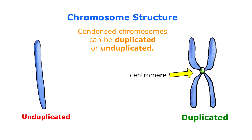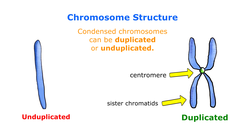We call the attached chromosome duplicates sister chromatids, and we can still call the overall structure one chromosome because these sister chromatids contain identical genetic information.